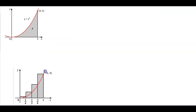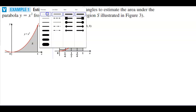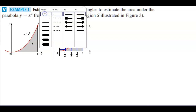Looking at this graph, we've created rectangles. These rectangles are formed toward the right because we're creating right endpoints at the curve. So here are our right endpoints. Now, how do we get 1/4, 1/2, 3/4, and 1 to be our endpoints?